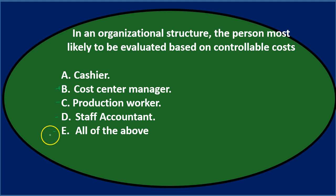We may think E — that everybody needs to be held responsible for controllable costs — but the final answer is B, cost center manager. That's the one we're typically making reports for, with controllable costs related to that center. Final answer: B, cost center manager.